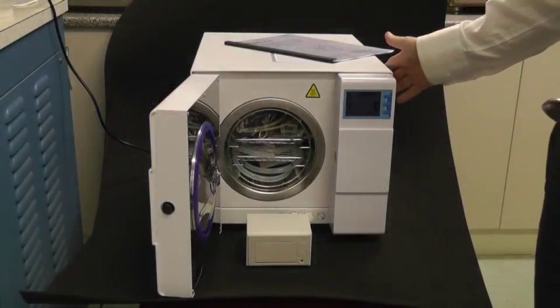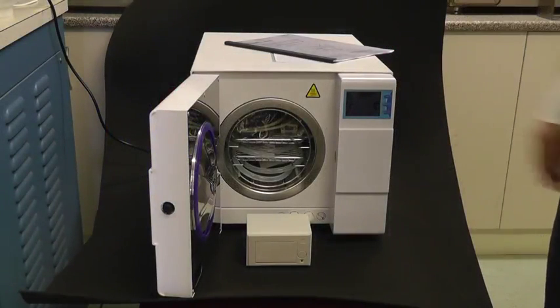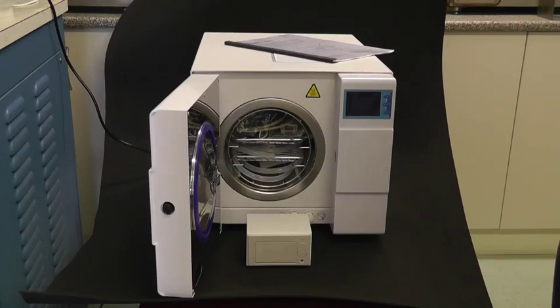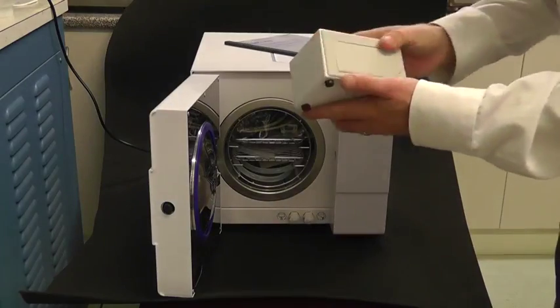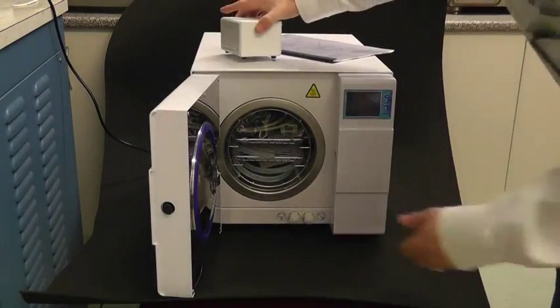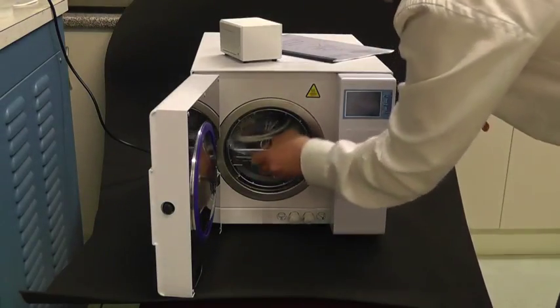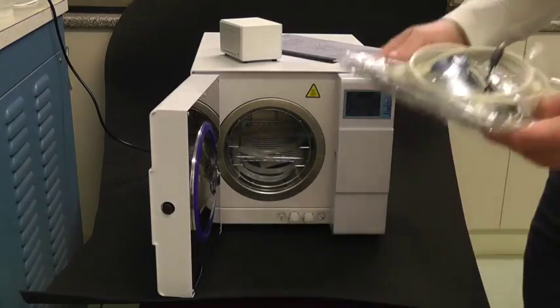Okay, so this is the 8L autoclave from Iconclav. What we'll first do is set up the autoclave before we turn it on. The first thing I'll do is unpack what's inside the chamber. The first item here is the printer.